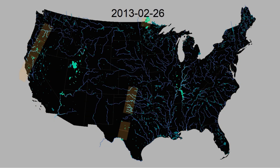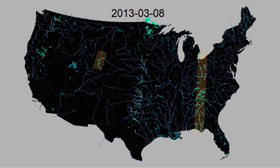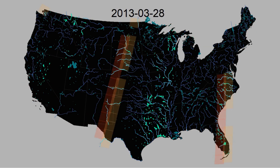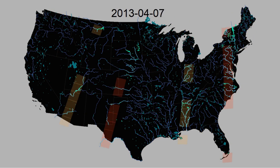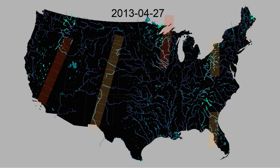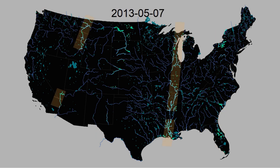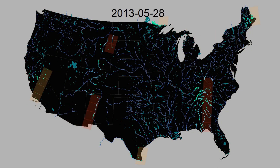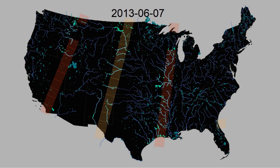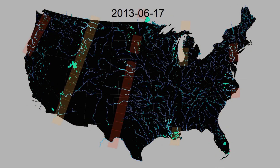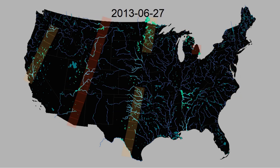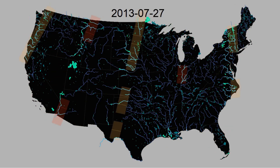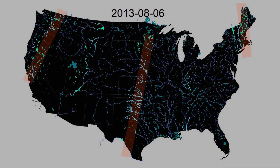Despite the potential of these images to tell us about water quality variation across the United States over the past 35 years, there has never been a truly national scale usage of the data. All the imagery from these satellites represents untapped potential to predict water quality from imagery and to understand how our nation's waters have changed since 1984.